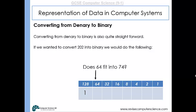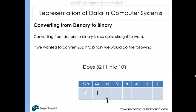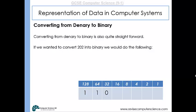64 does fit into 74, so we put a one in that column — we know 202 is made up of one lot of 128 and one lot of 64 and something else. We subtract 64 from 74, leaving 10. Does 32 fit into 10? No, it doesn't. So we put a zero there. We cannot make 202 from 128, 64, and 32, so we put a zero and move on. Does 16 fit into 10? No. So we put a zero there.